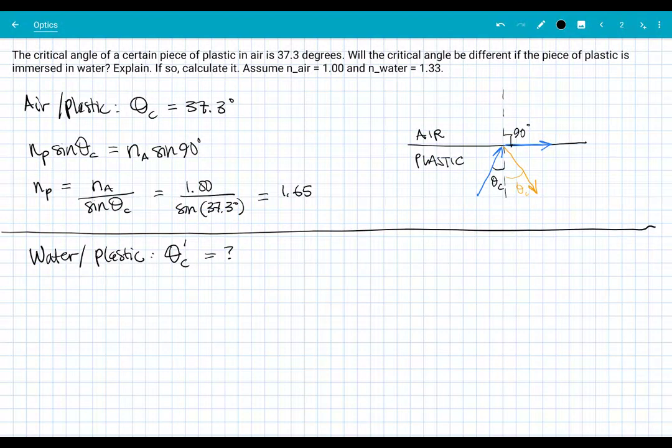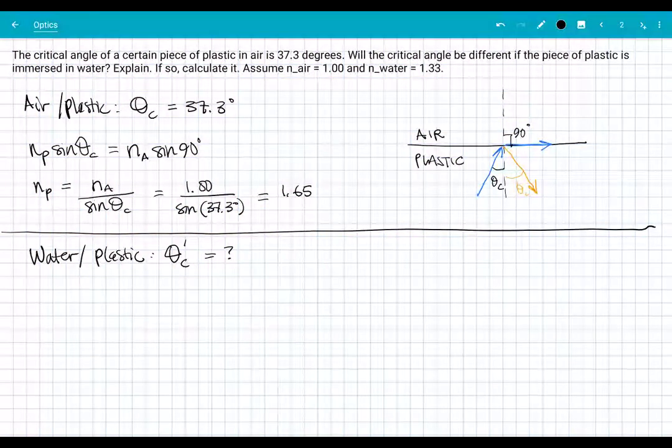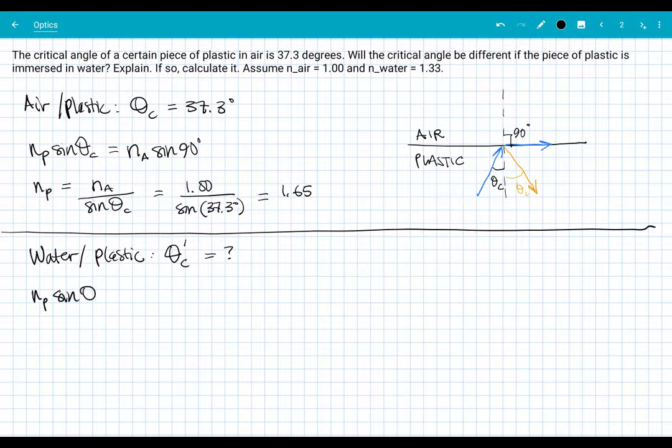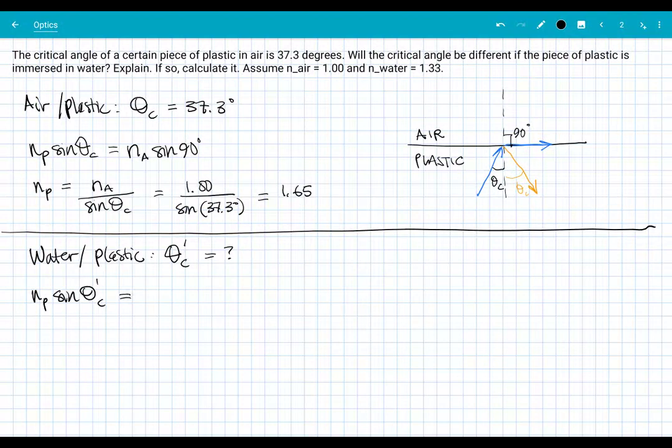So it's basically the same kind of diagram as above, right? We're considering what is the new critical angle for that case. So let's look at our Snell's law equation. What would that look like here? N value for plastic times sine of this new critical angle equals the n value for water times sine of, again, 90 degrees. That is what describes something as total internal reflection.